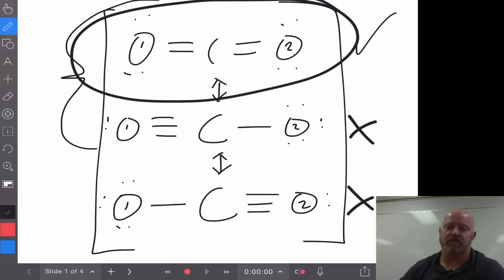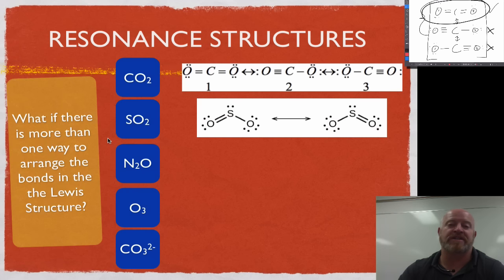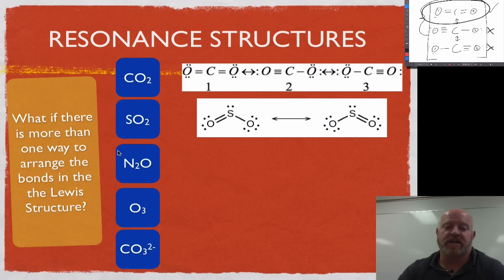We're going to look at three more resonance structures as practice: NO₂, O₃, and CO₃²⁻. You can get a chance to practice drawing up the different resonance structures and how they would look. Go ahead and pause the video to practice doing the resonance structures for these three, and then in a second I will show you the answers.